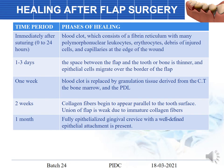Healing after flap surgery: immediately after suturing, a blood clot forms. After one to three days, a space forms between the flap and tooth or bone, and epithelial cells begin to migrate over the border of the flap. After one week, the blood clot is replaced by granulation tissue derived from connective tissue, bone marrow, and the periodontium. After two weeks, collagen fibers appear parallel to the tooth surface, though union of the flap is weak due to immature collagen fibers. After one month, there is a fully epithelialized gingival crevice with a well-defined gingival attachment.